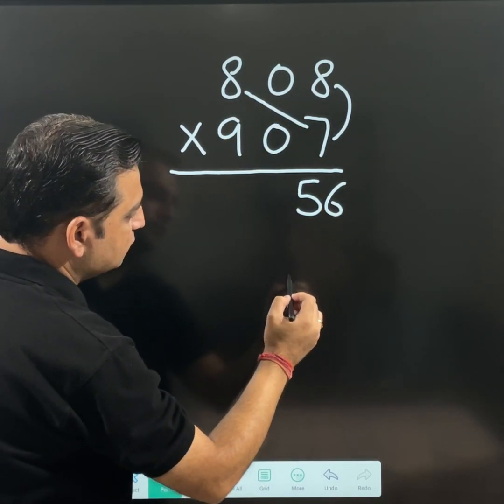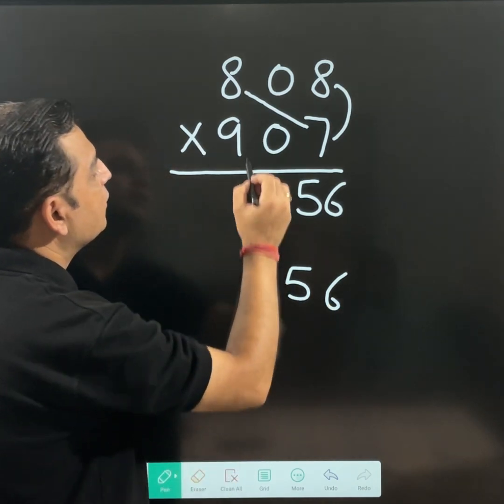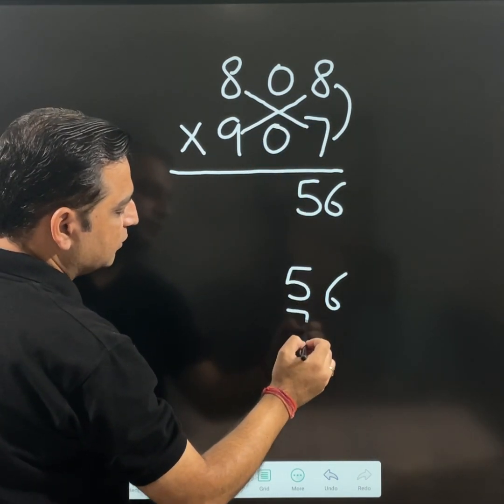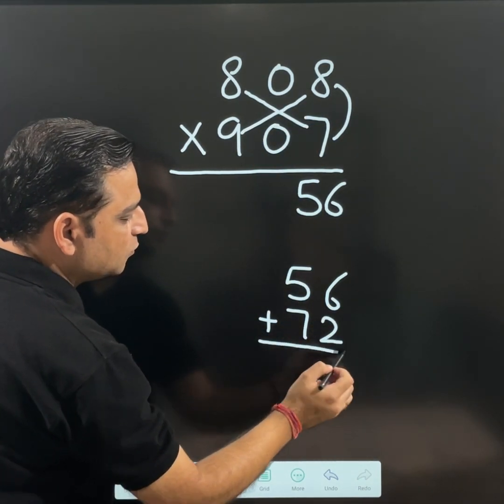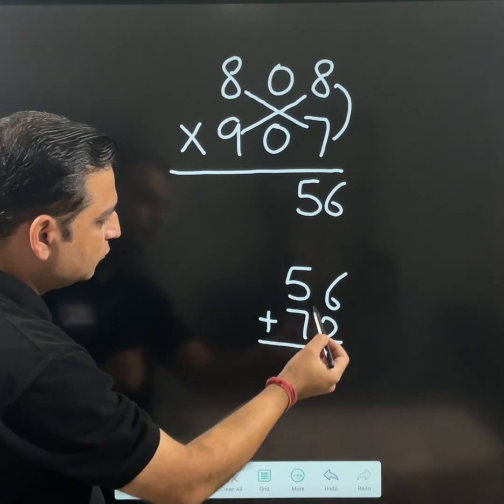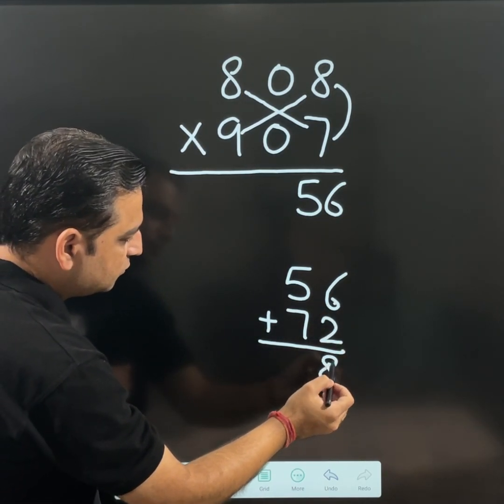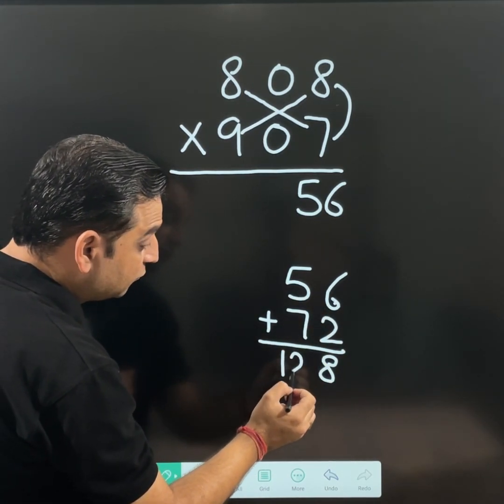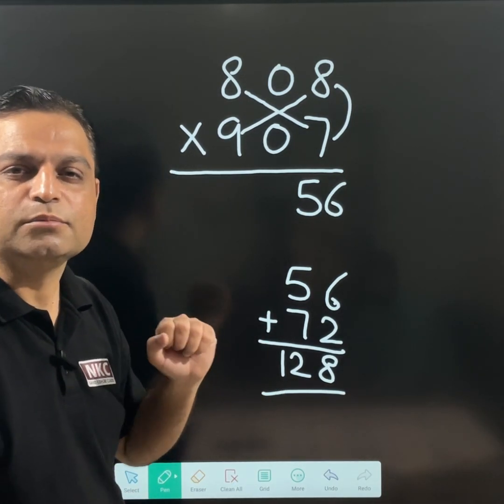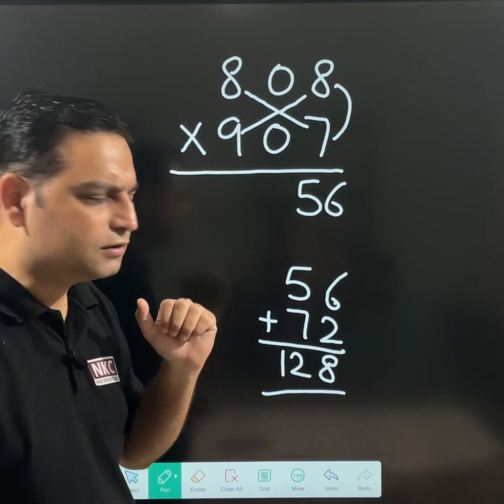Now cross multiply. 8 multiplied by 7 is 56. 9 multiplied by 8 is 72. We were supposed to add it. What is 6 plus 2? This is 8. 7 plus 5 is 12. See, this is the case of a 3-digit number. But this is not difficult.